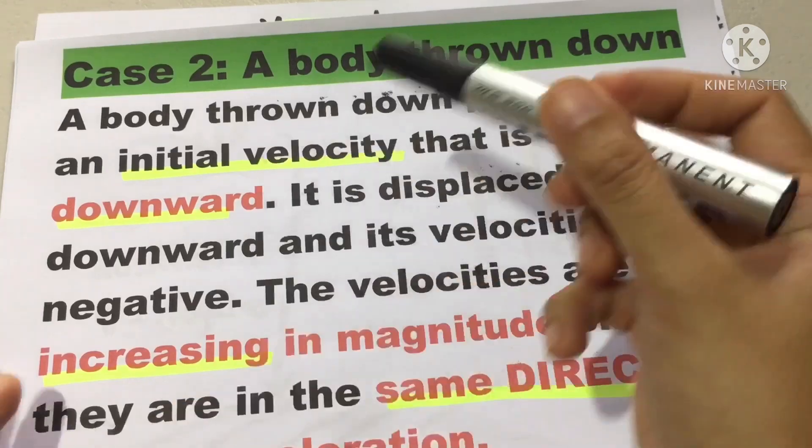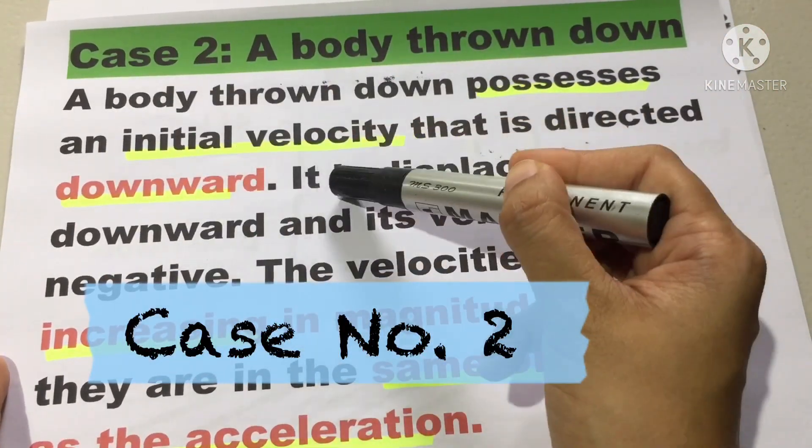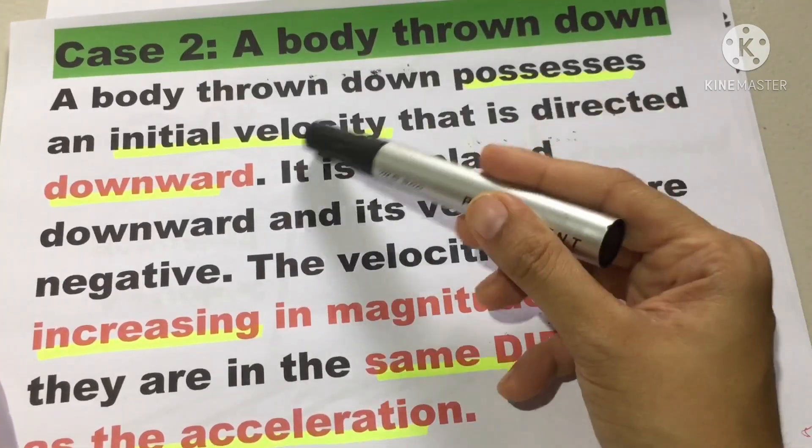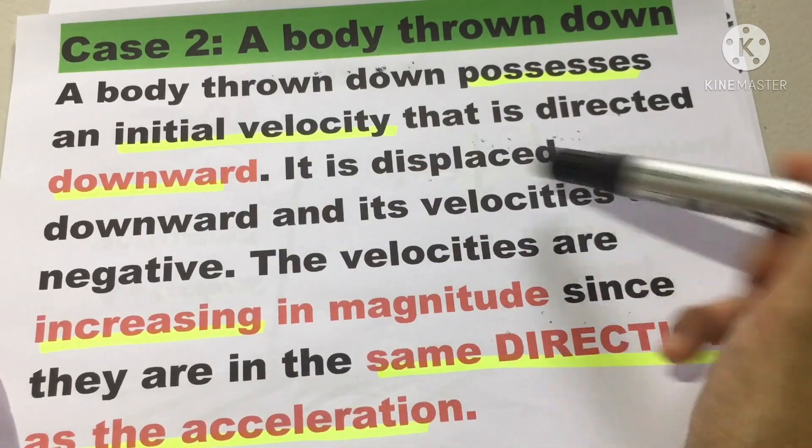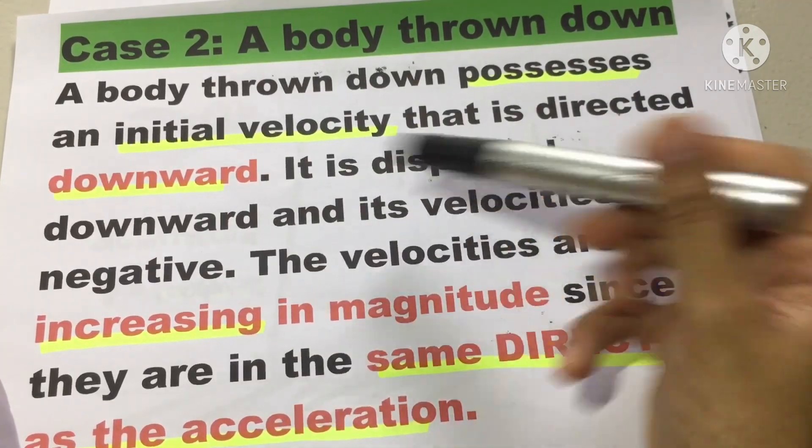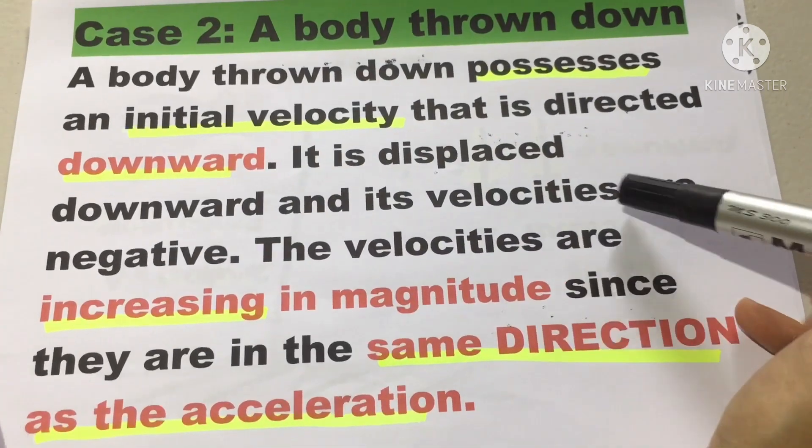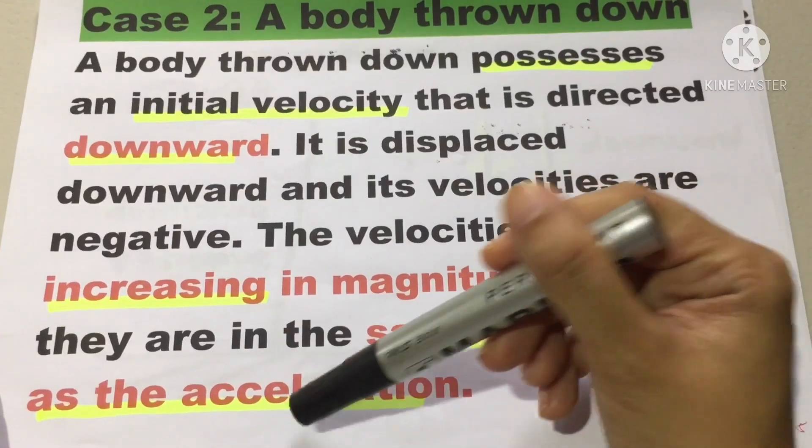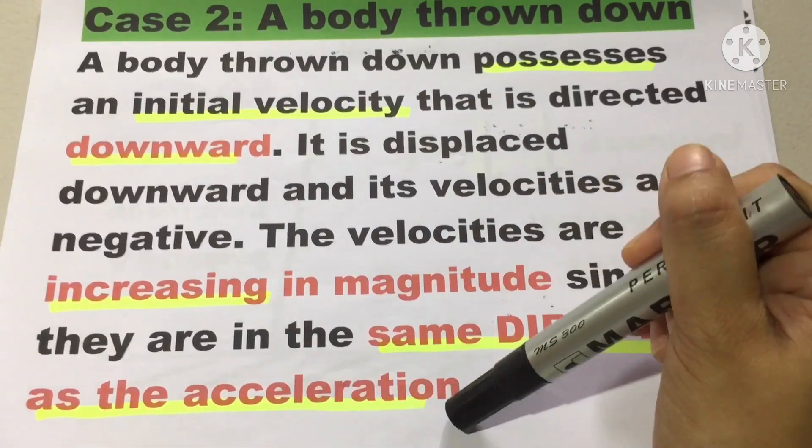For our case number two, a body thrown down. A body thrown down possesses an initial velocity that is directed downward. It is displaced downward and its velocities are negative. So our sign convention, our velocity is negative. The velocities are increasing in magnitude since they are in the same direction as the acceleration.